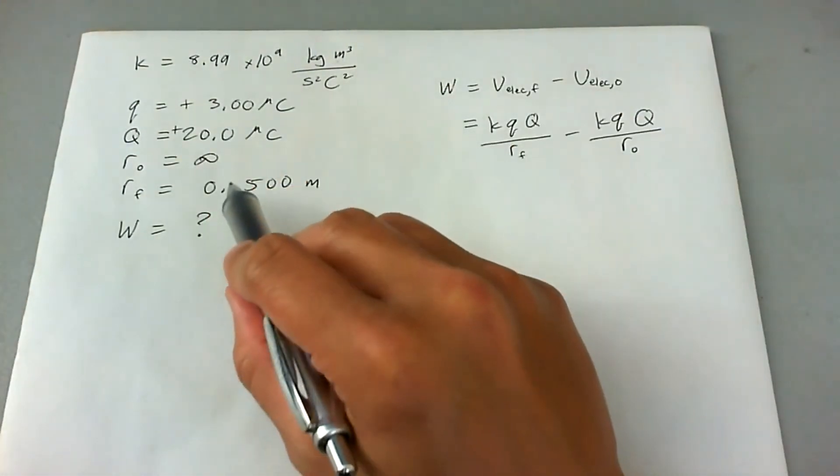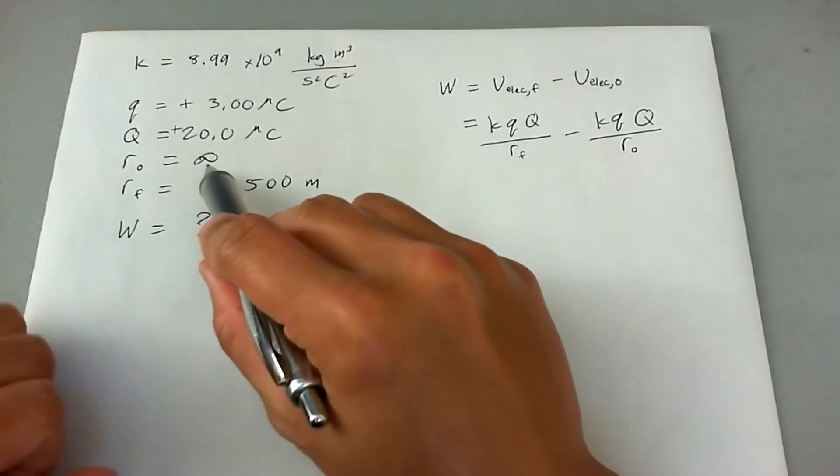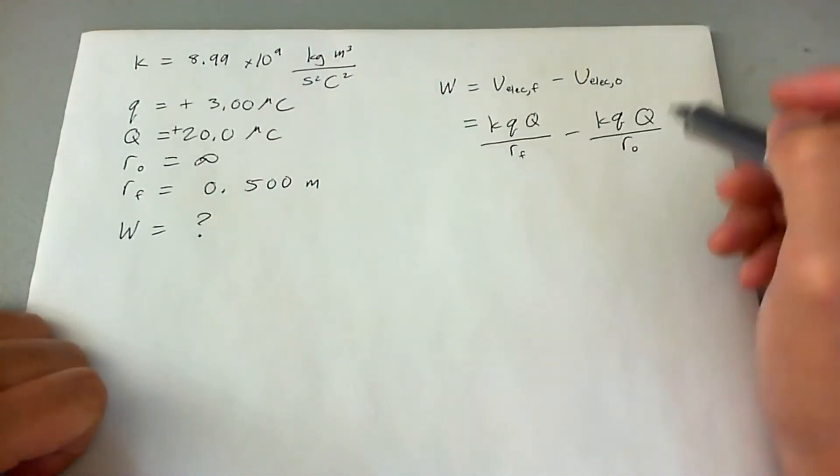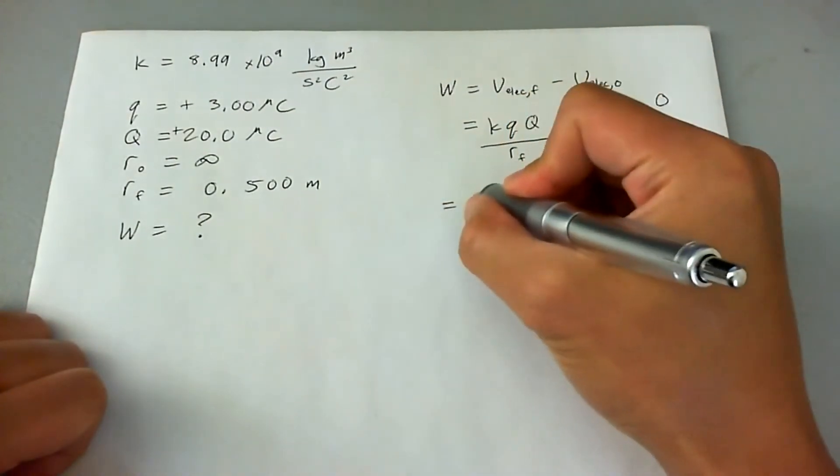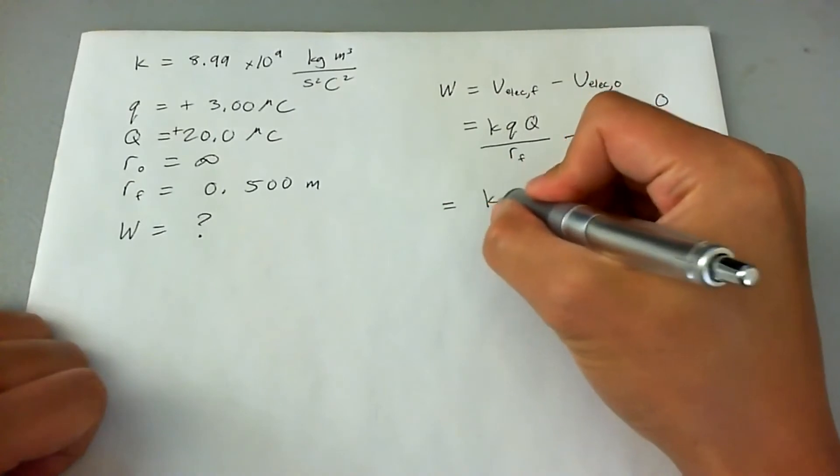We see first that the charge starts off at infinity. So r naught is infinity, this whole term goes to zero. That means that we have now this term left over.